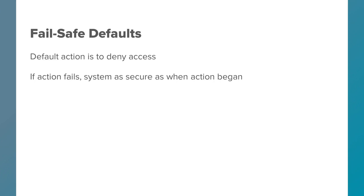The second one is perhaps less obvious. It's what happens when failure occurs. The system should always fail safe, in the sense that when failure occurs, the system is just as secure as when the process that failed began. In other words, in failing, you don't give away any information or privileges.